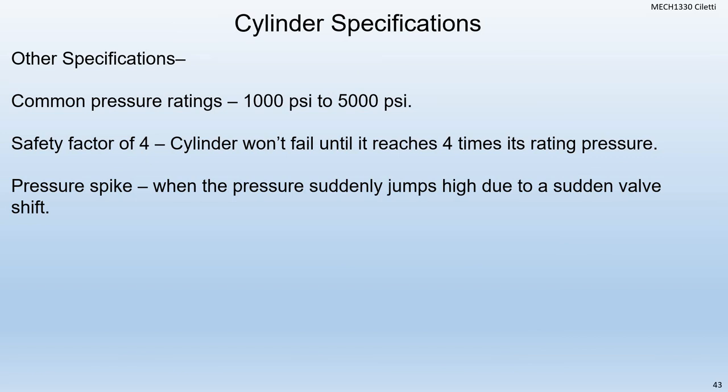Common pressure ratings are anywhere from 1,000 PSI to 5,000 PSI. We generally design them with at least a safety factor of four, which means a cylinder won't fail until it reaches four times its pressure rating. So if it goes a little above its pressure rating for one reason or another, it will not fail — it has to reach four times that to fail. And then if you have a pressure spike — when pressure suddenly jumps high due to a sudden shift or similar — the cylinder should be able to handle those.